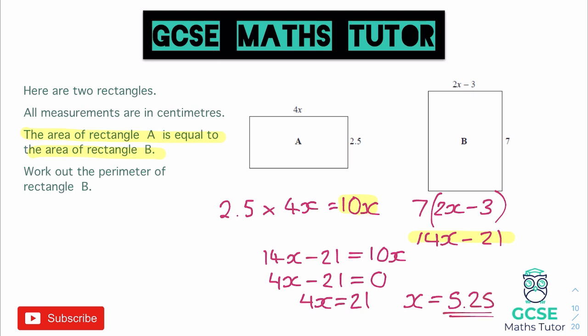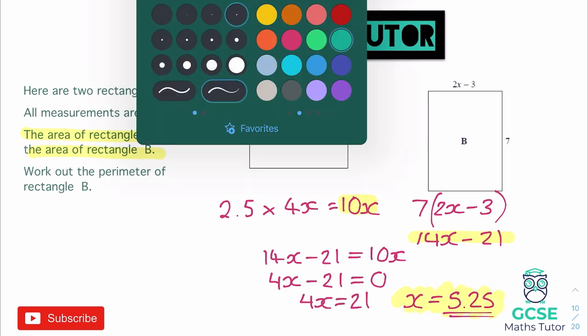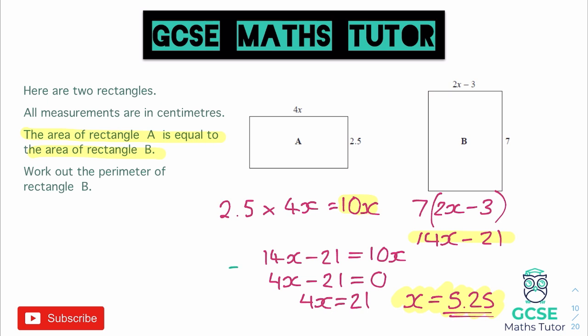So there we go. We have our value of X. And we can just highlight that because that's an important piece of information there. Okay, so in that solving the equation part, you can always write down what you did as well. We subtracted 10X from both sides.